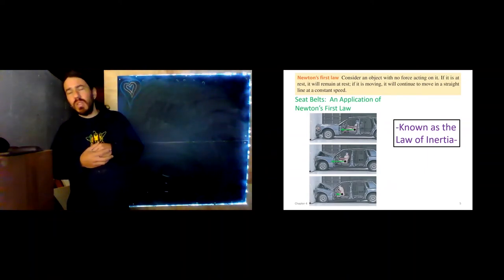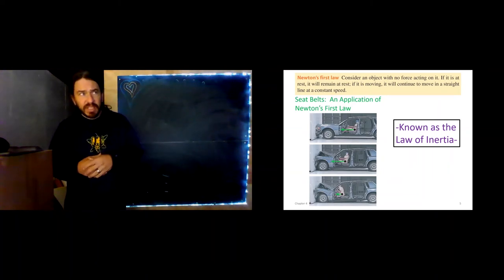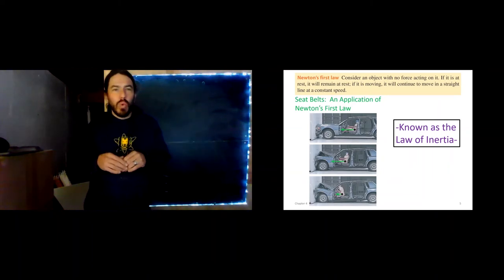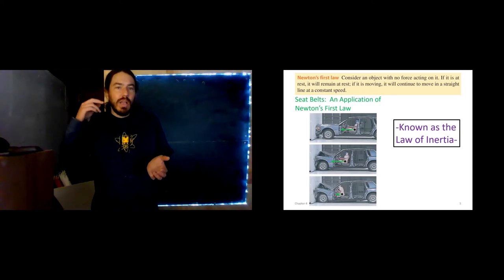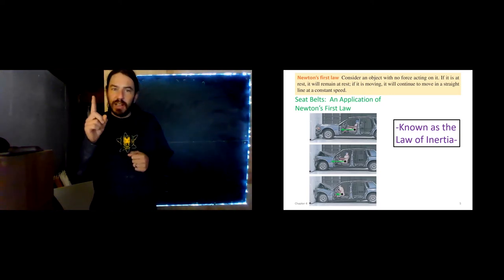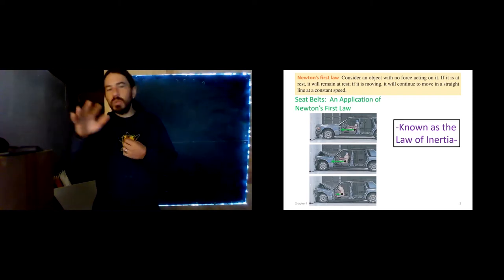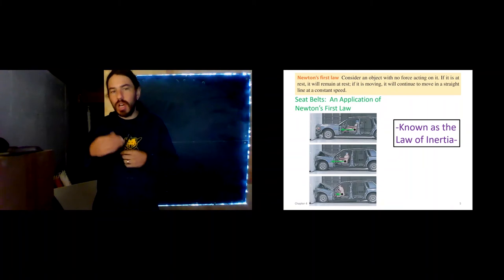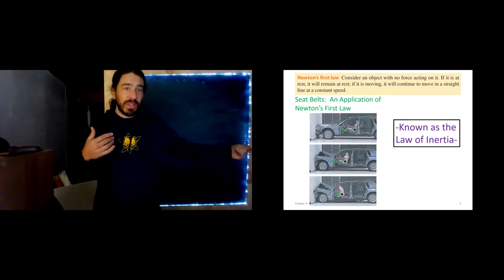Newton's first law. Guess what? Newton didn't come up with this idea. Guess what? This is Galileo's idea. We call it Newton's first law because he was the first one to publish it with his second and third laws, and together they make a complete description of motion. And so, he gets to call it Newton's first law, even though it was Galileo that first really had this idea. Consider an object with no force. If it is at rest, it will remain at rest, and if it is moving, it will continue to move in a straight line at a constant speed.